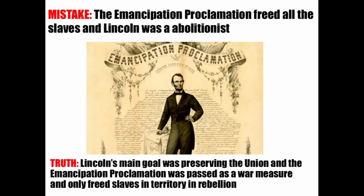Another popular mistake: the Emancipation Proclamation freed all the slaves and Lincoln was an abolitionist. The truth is Lincoln's main goal was preserving the Union, and the Emancipation Proclamation was passed as a war measure and only freed slaves in territory that was in rebellion. Lincoln was not trying to end slavery everywhere when elected in 1860 — it was a free soil position. The EP only applied to the Confederacy because Lincoln didn't want to anger the border states that still had slaves but were loyal to the Union.